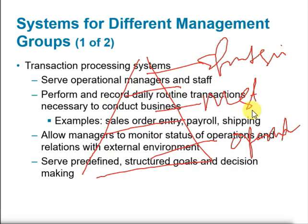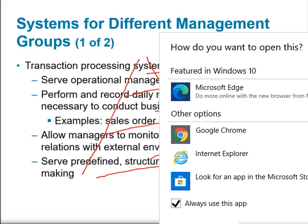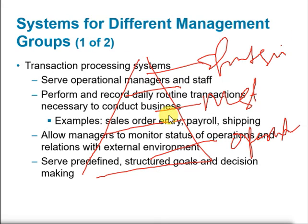The first category we look at is transaction processing systems. Transaction processing systems serve the operational managers and staff, who perform, record, and track daily routine transactions necessary to conduct business — for example, the processing of sales orders, payroll, and shipping. They also allow managers to monitor the status of operations and relations with the external environment. The data collected by those who work with transaction processing systems is provided to middle-level management to make short- to medium-term decisions.